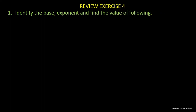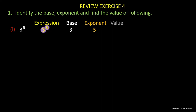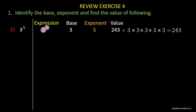Question number 1: Identify the base, exponent, and find the value of the expression. Problem number 1: 3 to the power 5. In this expression we have to identify the base and exponent and find its value. This value is the base, and this value is called the exponent. The value of the expression is 243, because when you multiply 3 by itself 5 times you get 243.